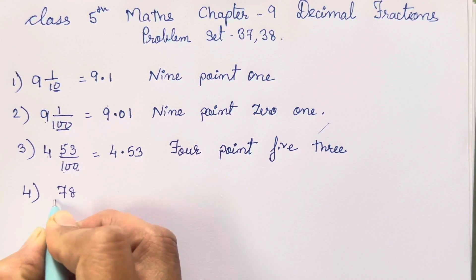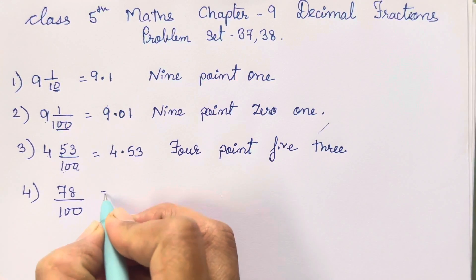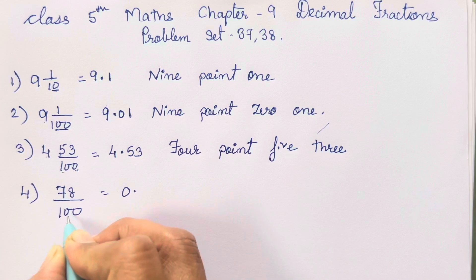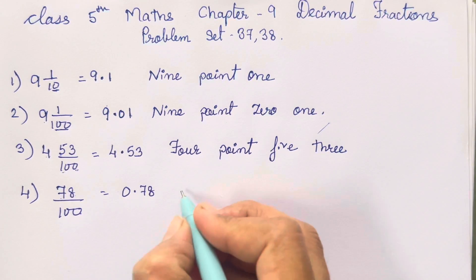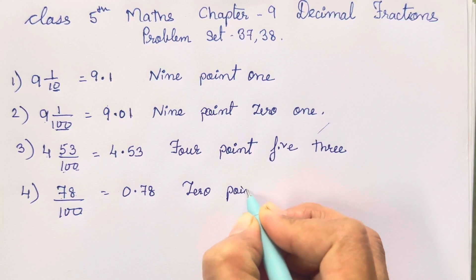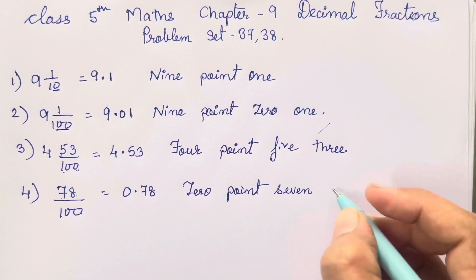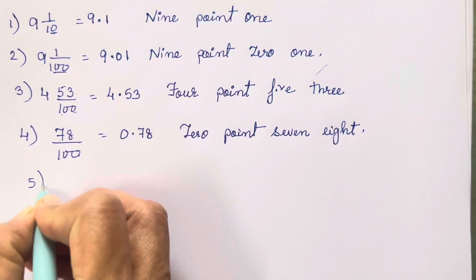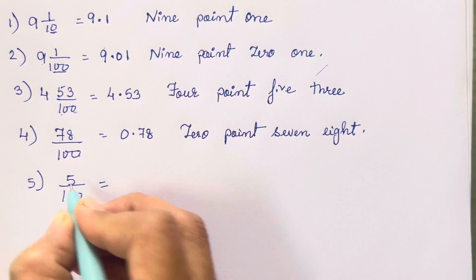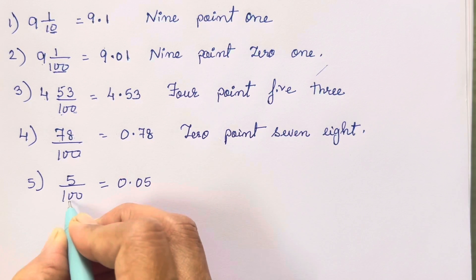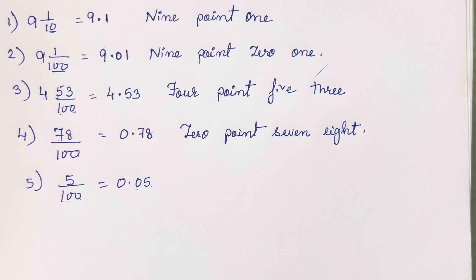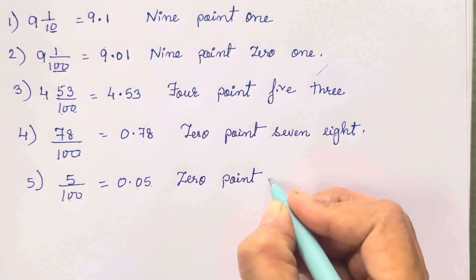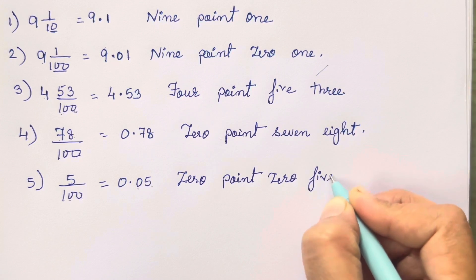Now the fourth one is 78 upon 100. Over here there is nothing before the fraction — it is not a mixed fraction. So we are going to write zero before the decimal. Two zeros means two digits after the decimal, and we already have two digits. So 0.78. Not 78. The fifth one is 5 upon 100 — only one digit is there, so 0.05, because we need two digits after the decimal point.